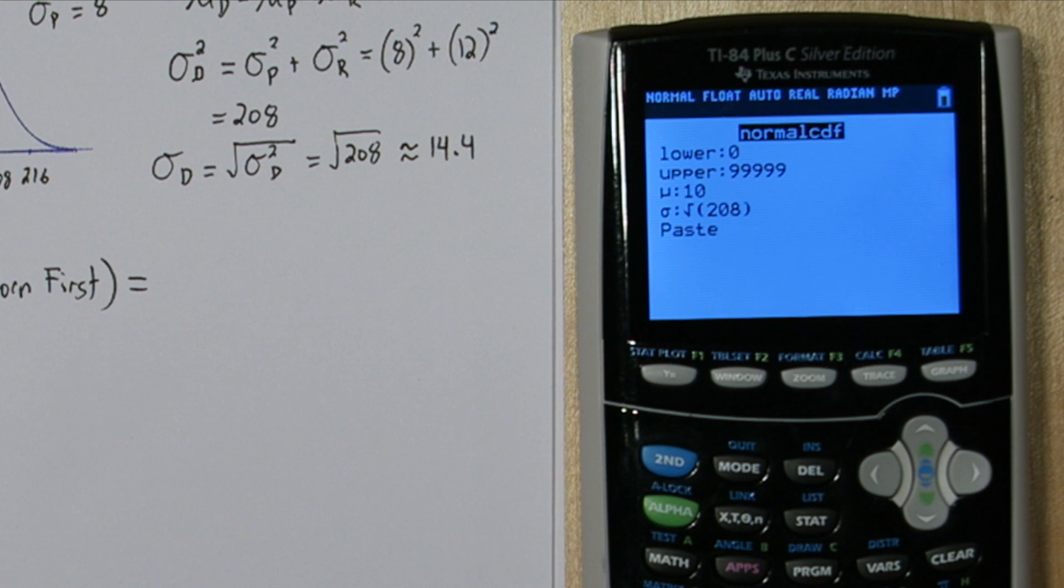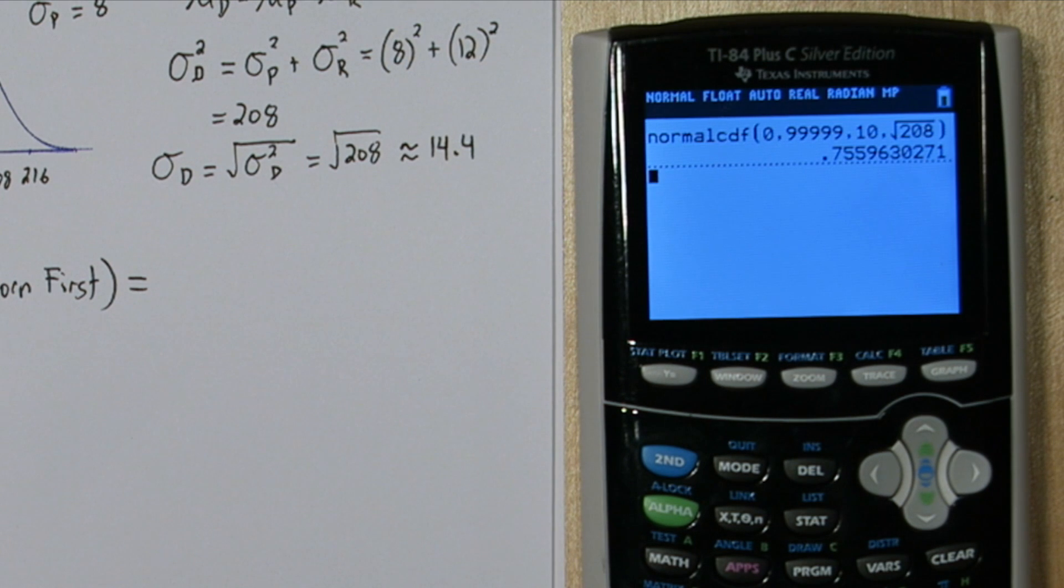And when we press enter, we see the probability that the Roeberg baby is born first is about 0.756.